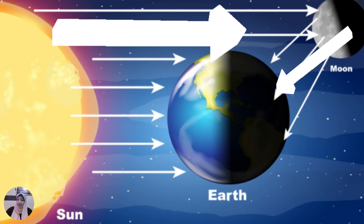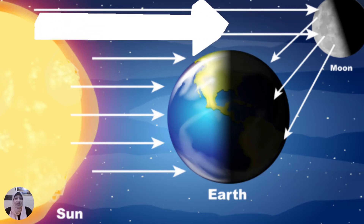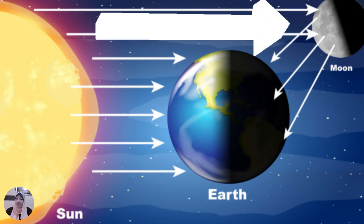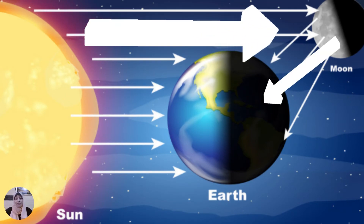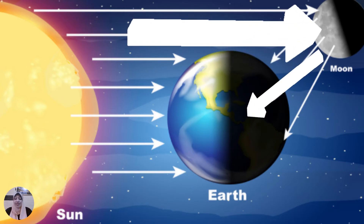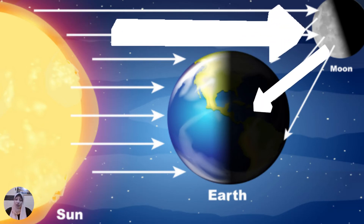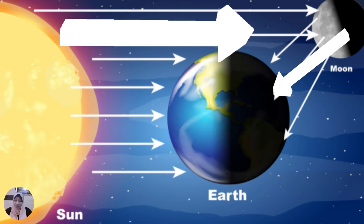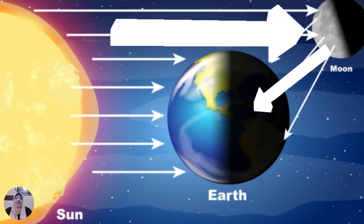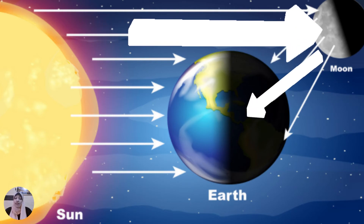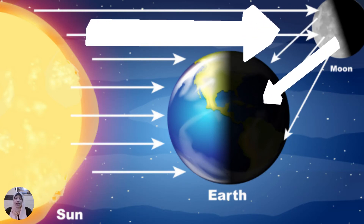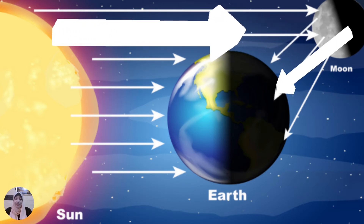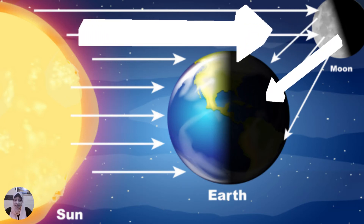Again: the light from the sun hits the surface of the moon, and the moon reflects that light back to the earth. So why is the moon shining? Because it is reflecting. The moon is shining because it is reflecting the light of the sun.